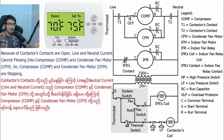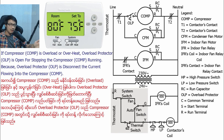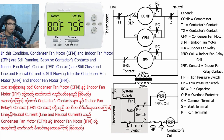If the compressor is overloaded or overheated, the overload protector opens to stop the compressor running, because the overload protector disconnects the current flowing into the compressor. In this condition, the condenser fan motor and indoor fan motor are still running, because the contactor contacts and indoor fan relay contacts are still closed and line and neutral current is still flowing into them.